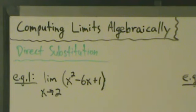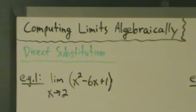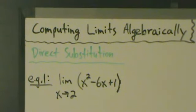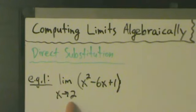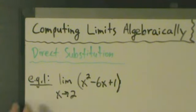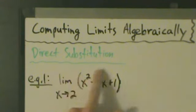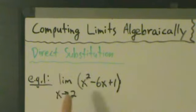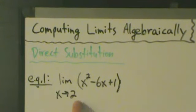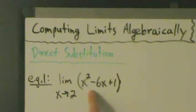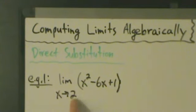Let's go ahead and do five examples. We'll start with this one here: the limit as x approaches 2 of x squared minus 6x plus 1. As the name implies, direct substitution — we're just going to take this value 2 and directly substitute it into this expression. Anywhere we see an x, we're just going to replace it with a 2.